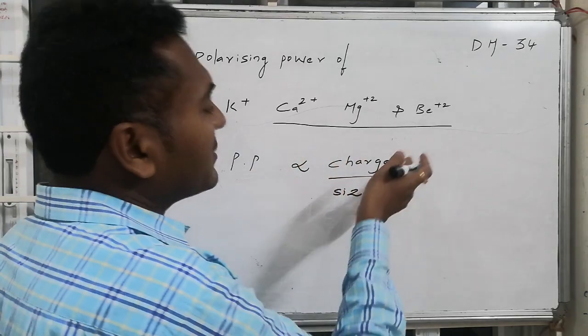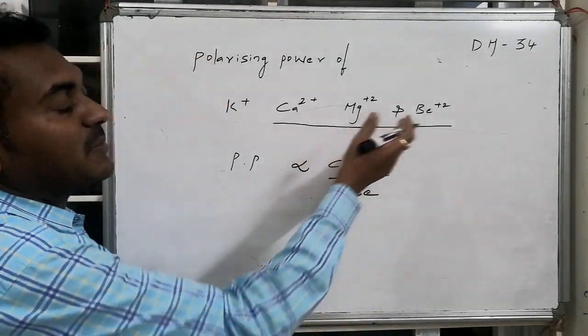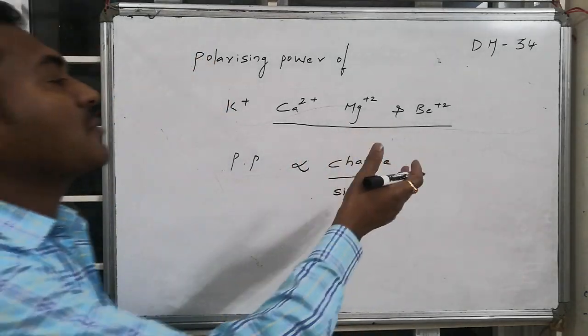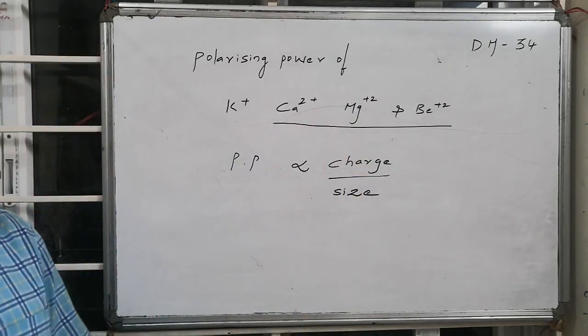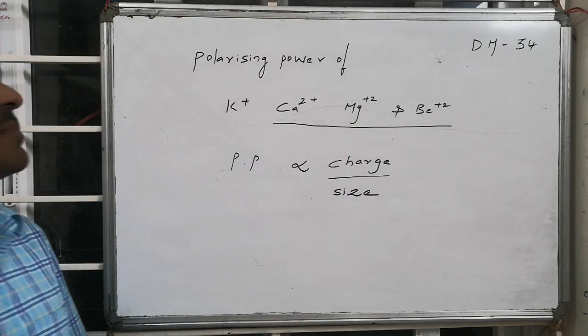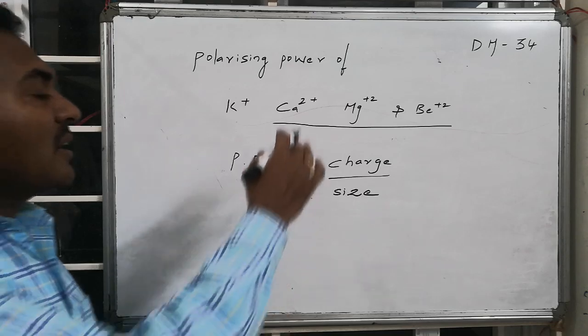Polarization power is proportional to charge. In respect of charge, if we look at Beryllium 2+, Magnesium 2+, Ca2+, having higher charge implies higher polarization power.